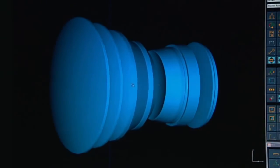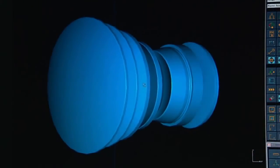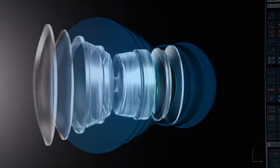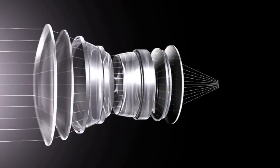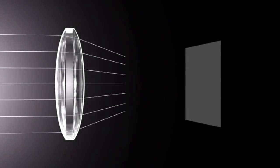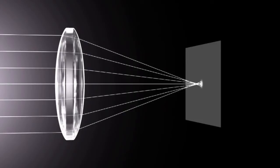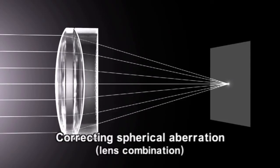The first step toward correcting aberrations is to combine lenses with different characteristics, such as convex and concave lenses. Spherical aberration occurs in opposite directions in the case of convex and concave lenses, so aberrations can be corrected by combining these two lens types.